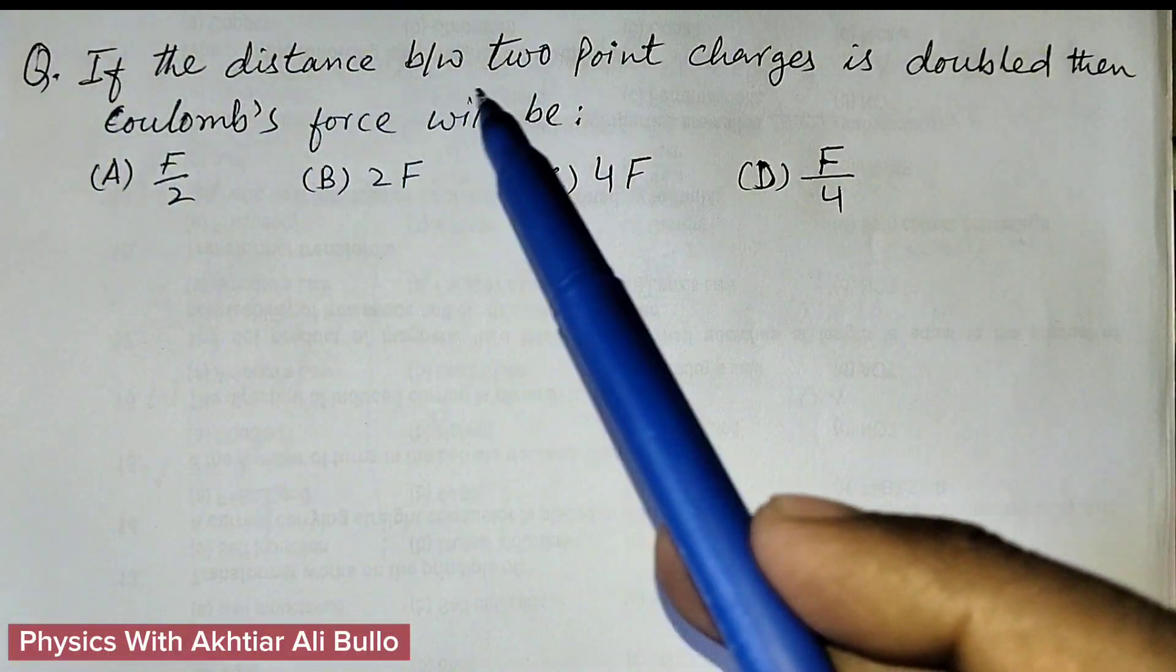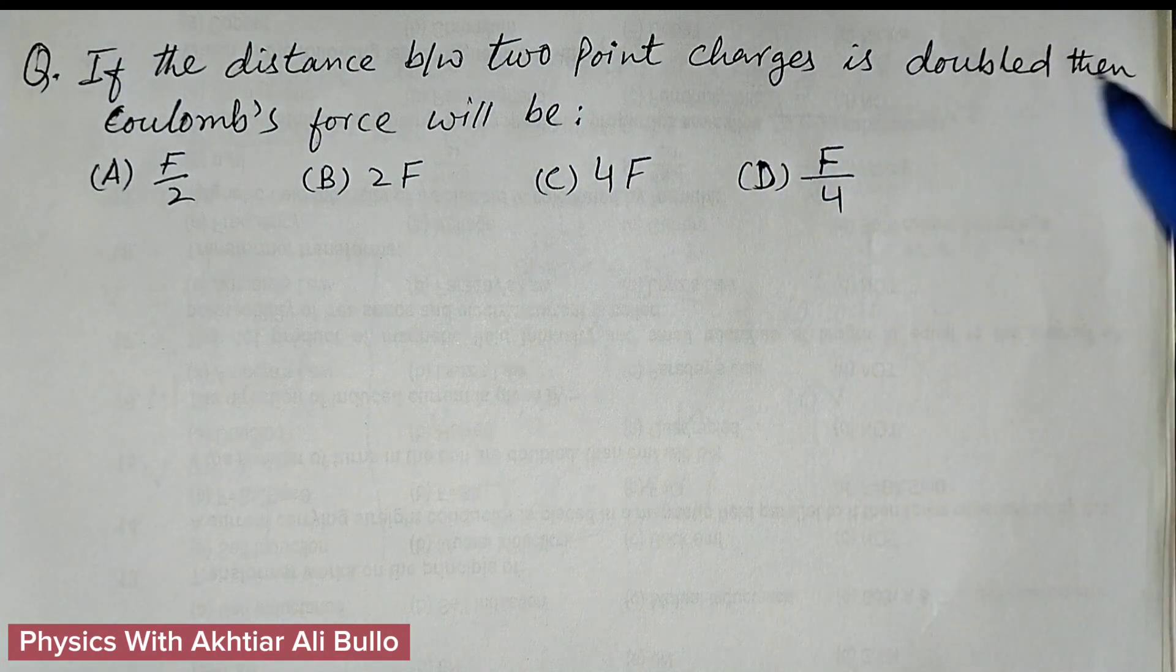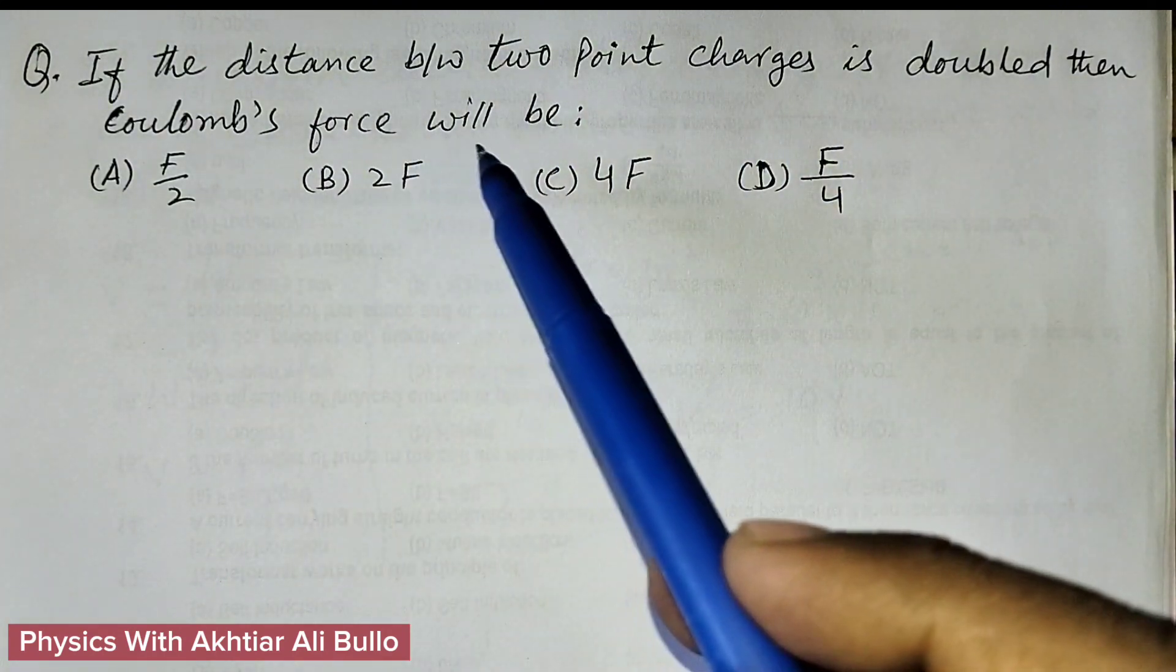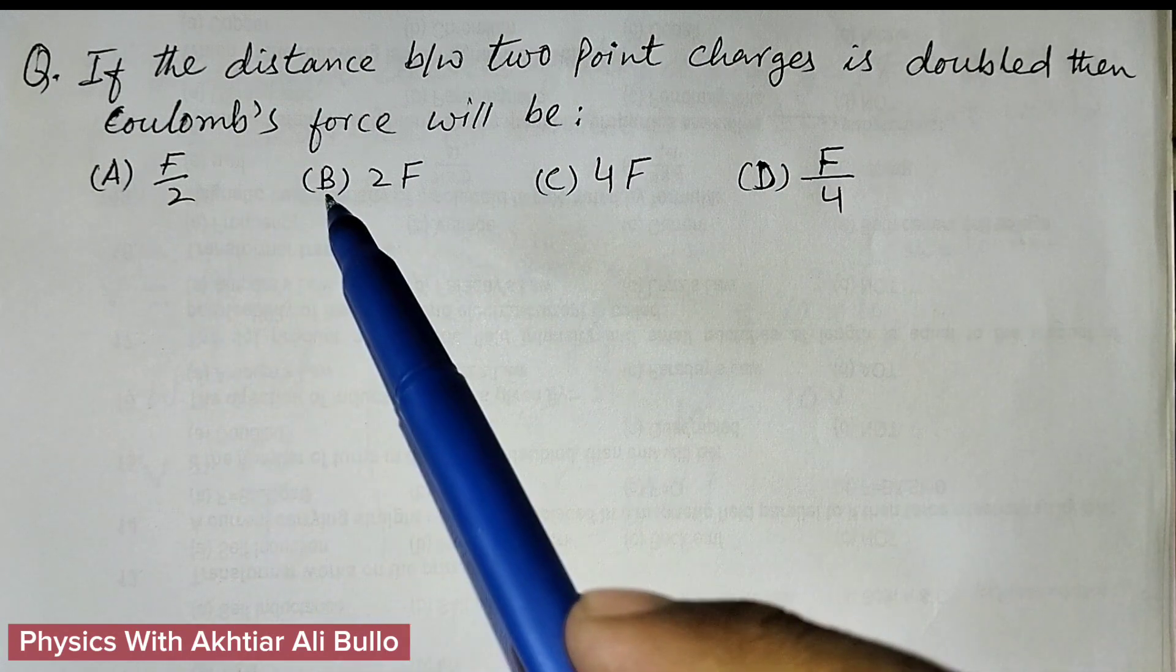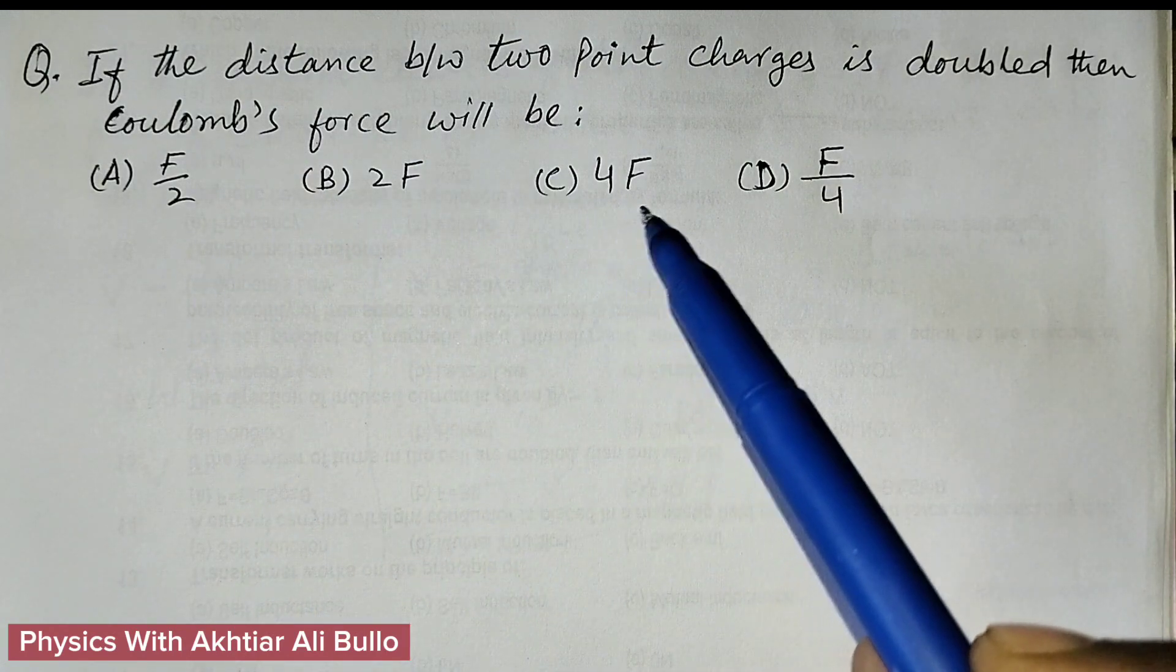The question is, if the distance between two point charges is doubled, then Coulomb's force will be: A) F upon 2, B) 2F, C) 4F,